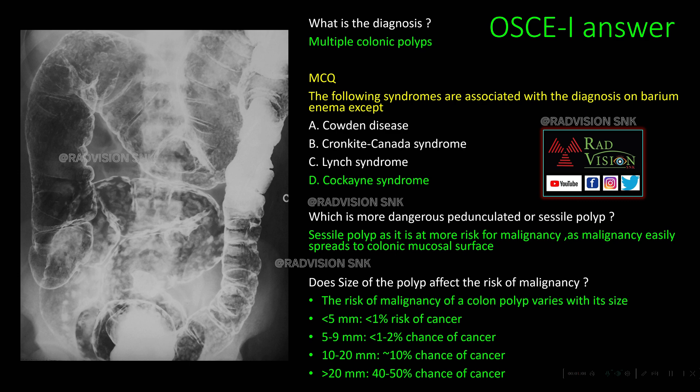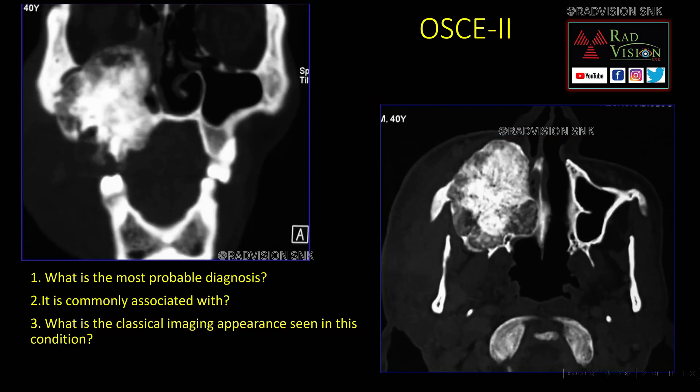Which is more dangerous — a pedunculated polyp or a sessile polyp? A sessile polyp is more dangerous because malignancy more easily spreads to the colonic mucosal surface than with pedunculated polyps. Does size affect malignancy risk? Yes: less than 5mm carries 1% risk; 5–9mm up to 2%; 10–20mm up to 10%; and greater than 20mm carries a 40–50% chance of malignancy. These are the key points to remember about colonic polyps.